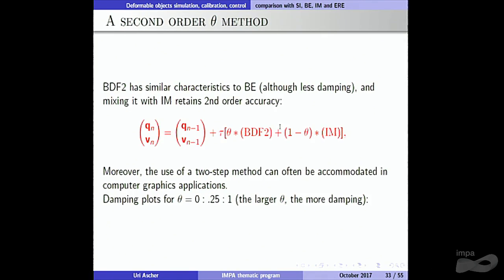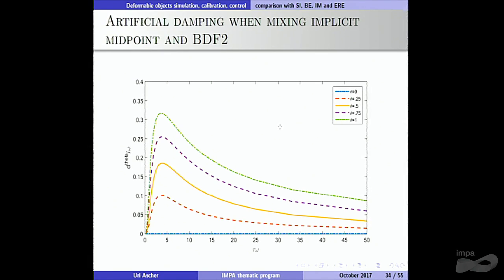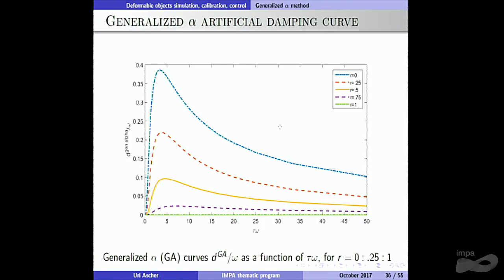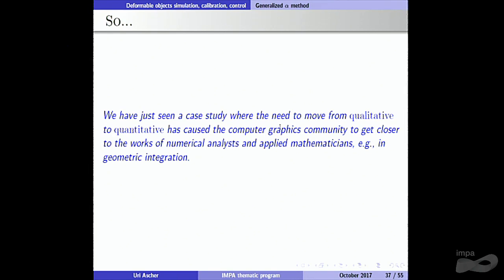You can mix implicit midpoint with BDF2 (which is like second-order backward Euler), with theta as the mixing factor. As you move from implicit midpoint toward BDF2, the artificial damping curves increase. You can play with how much artificial damping to allow. The generalized alpha method gives similar results. The point of this entire exercise is that the need to move from qualitative to quantitative has caused the computer graphics community to get closer to the scientific computing community — toward geometric integration and symplectic methods.